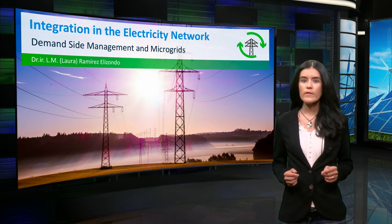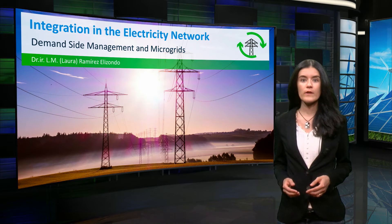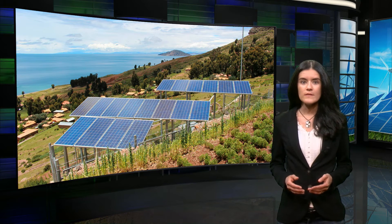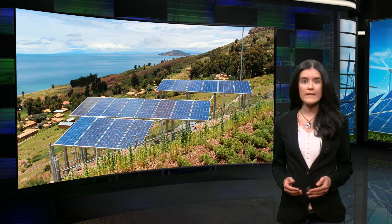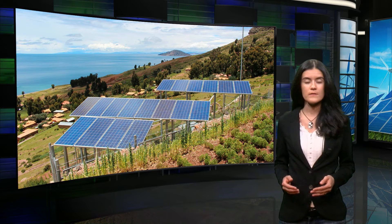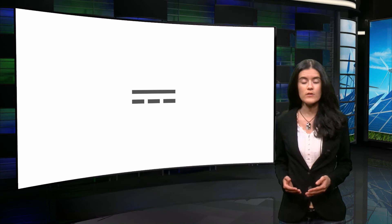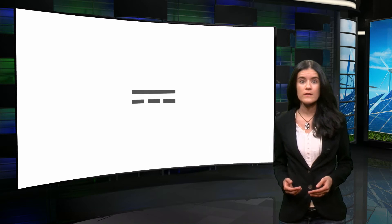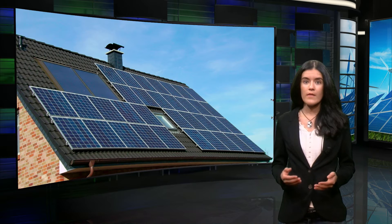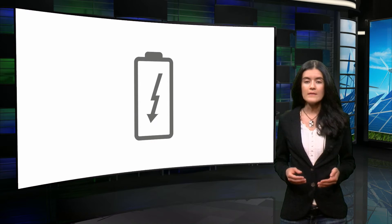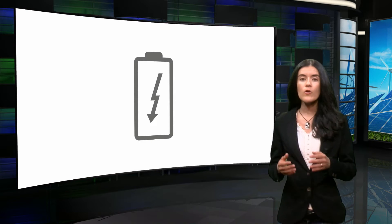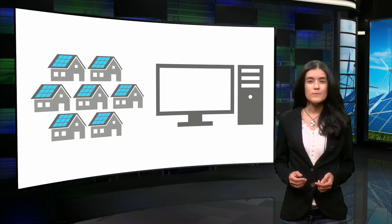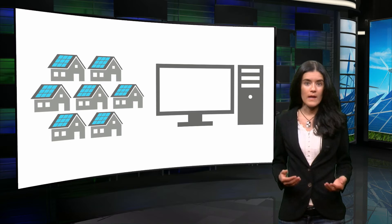Let's recall the main changes that are likely to occur in the power system. First, generation will consist more and more of small-scale uncontrollable renewable sources. Most generation and consumer devices will likely work with direct current. Generation is likely to occur at the place of consumption, and storage will play a major role in the power balance of the system. Finally, smart grid concepts will operate when allowed.